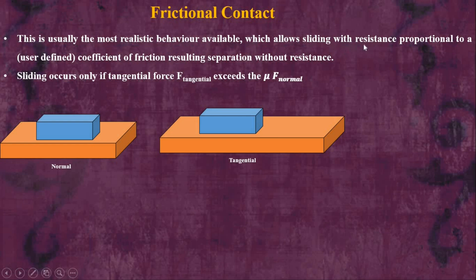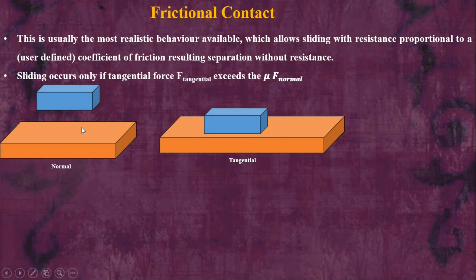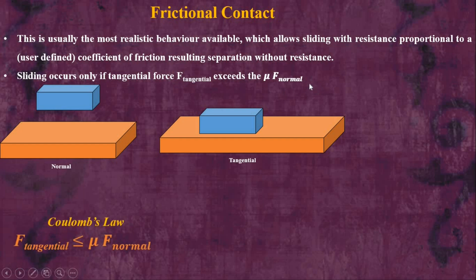Frictional contact allows sliding with resistance proportional to a user-defined coefficient of friction, resulting in separation without resistance. Looking at these two bodies, it allows free movement in the normal direction as well as sliding in the tangential direction. This sliding occurs only if the tangential force exceeds the normal force multiplied by the coefficient of friction.